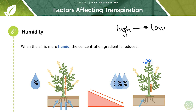In a high humidity environment, the area outside the leaf has a higher water concentration, so instead of moving from high concentration within the leaf to low concentration outside, the gradient is reduced or even reversed. This is not favourable for evaporation of water from the leaf surface. So the more humid the air, the lower the rate of transpiration, because the concentration gradient is reduced.